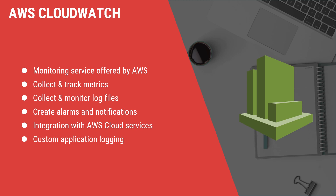CloudWatch can be integrated with AWS cloud services like EC2, RDS, VPC, ELB, and so on. We can also use it for custom application logs and create alarms based on these metrics. In this demo I'll show you how to send Apache web server logs to CloudWatch and create custom metric filters and alarms from those logs.